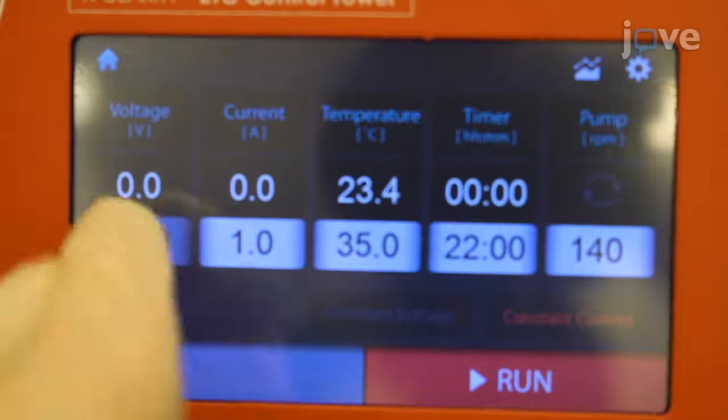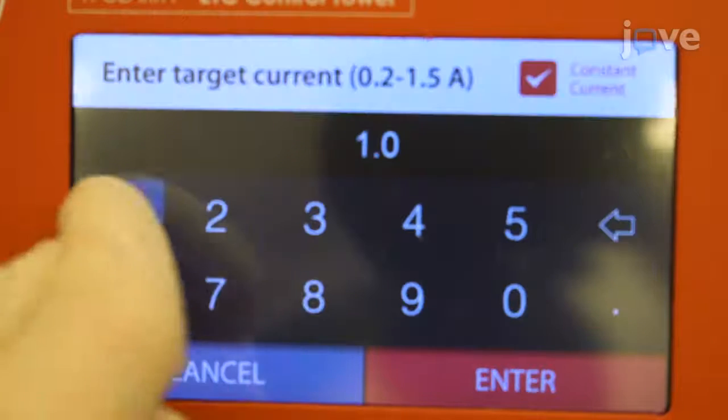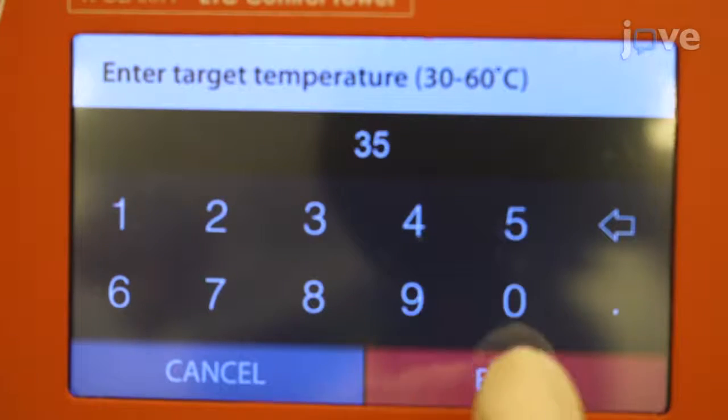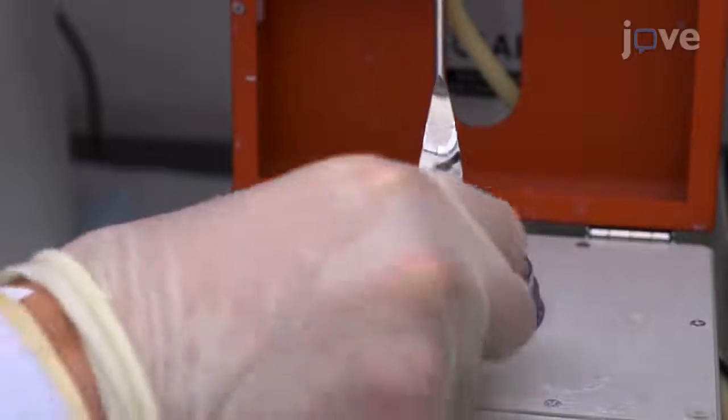Run the sample at 70 volts, 1 ampere, and 35 degrees Celsius with constant current for about 2 hours per milliliter of tissue.